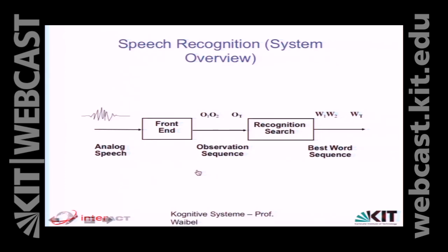Der Spracherkenner, wie er insgesamt funktioniert, ist so: wir bekommen ein Analogsignal rein, wir haben einen Frontend-Processor, der das umwandelt in Merkmalsvektoren. Diese Merkmalsvektoren sind unsere Muster, die alle 10 Millisekunden kommen. Im einfachsten Falle stellen wir uns das als Fourier-Spektrum vor. Das heißt, O1, O2, OT sind Vektoren, die spektrale Merkmale drin haben – jeder dieser Beobachtungsvektoren hat Fourier-Koeffizienten. Sie kommen alle 10 Millisekunden rein. Die Aufgabe ist: diese Sequenz von Beobachtungsvektoren – was ist die wahrscheinlichste Sequenz von Wörtern? Das ist das Ausgabeergebnis eines Spracherkenners.